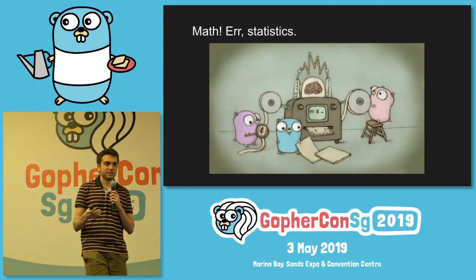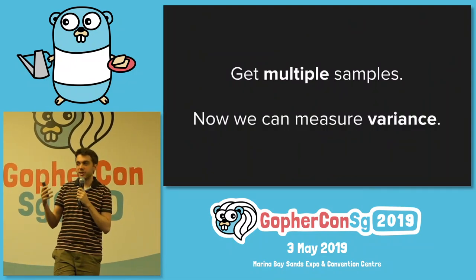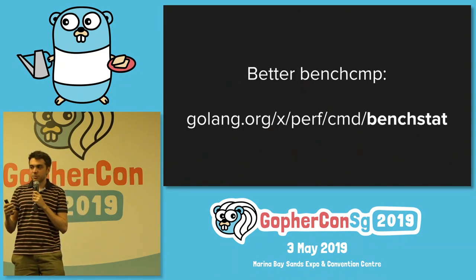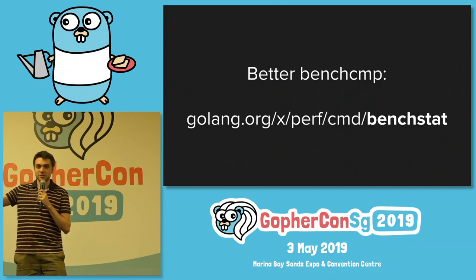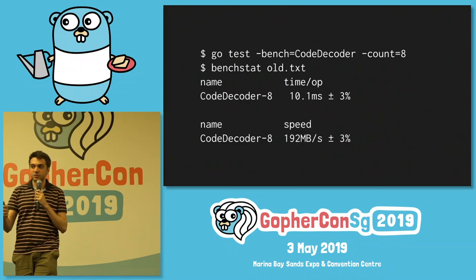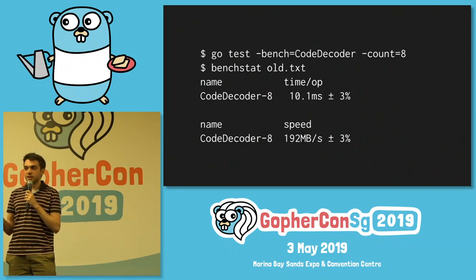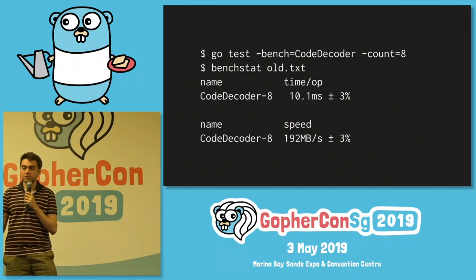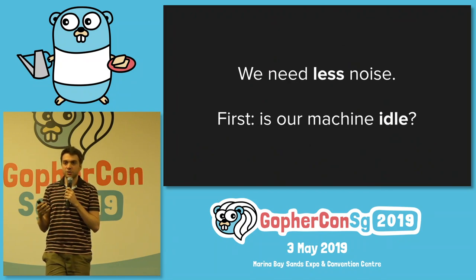We've got too much noise. The answer is statistics. You want to get multiple samples, and with that you can measure variance. Instead of using BenchComp, we're going to use BenchStat — just ignore BenchComp exists. If we run the benchmark eight times and feed that data into BenchStat, it tells us your benchmark runs at about 10.1 milliseconds on average, with a variance of plus-minus 3%. But we still need less noise — plus-minus 3% is not good enough if some improvements have been as small as 1%.